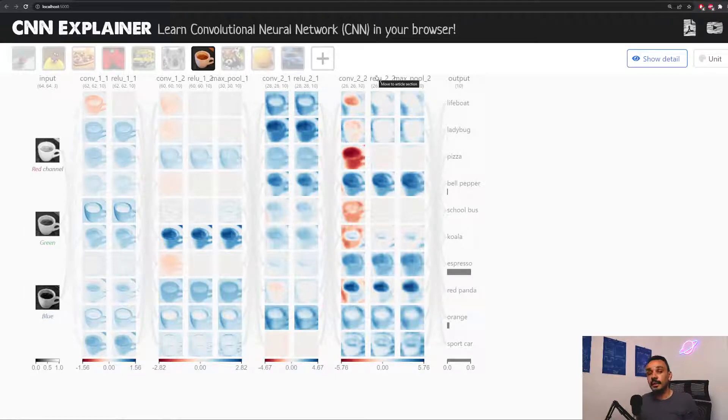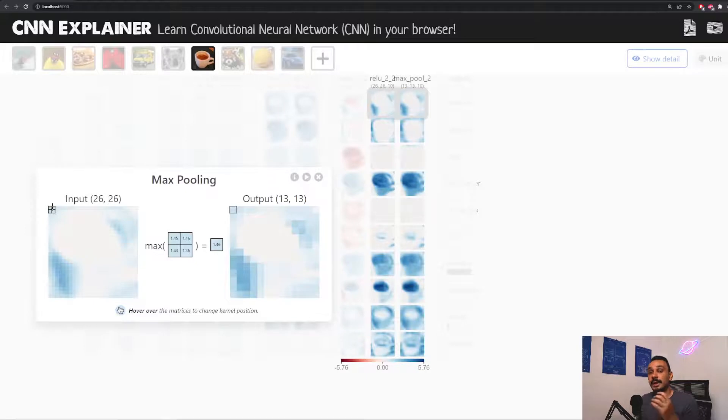Now, another method to extract information from an image is the max pooling or pooling layers in general. What pooling layers do is to take either the max, the average, or the minimum value from a set of pixels. So here, if we define a pool of 2x2, we will basically take the maximum value between those pixels values and we will move it on to the next layer.